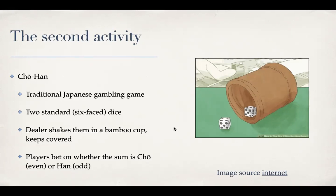Hello, and welcome back to the second part of this discussion on intents. The second activity in our Dice Games app we want to create is based on this traditional Japanese dice game, often a gambling game, called Chohan.